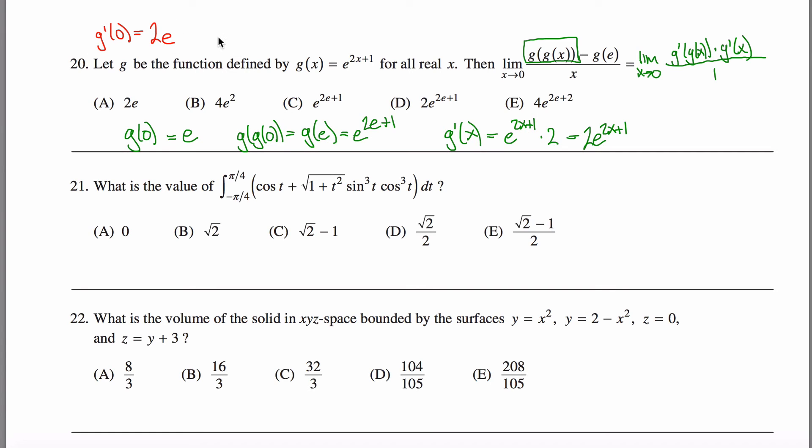And then g of zero is still e, so if I want g prime of g of zero, I'm really asking myself what is g prime of e. In other words, I'm going to take this function here, and everywhere I see an x, I'm going to change it into an e, and that'll give me 2e to the 2e plus 1 power.